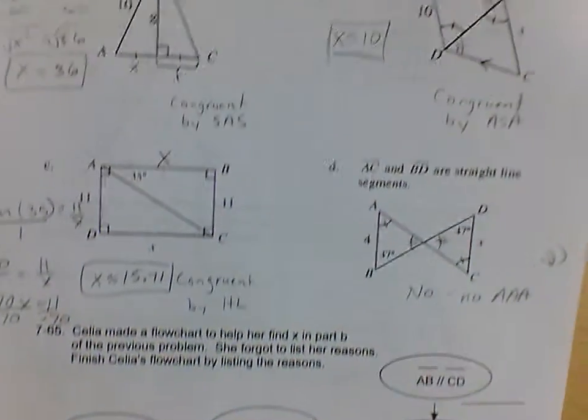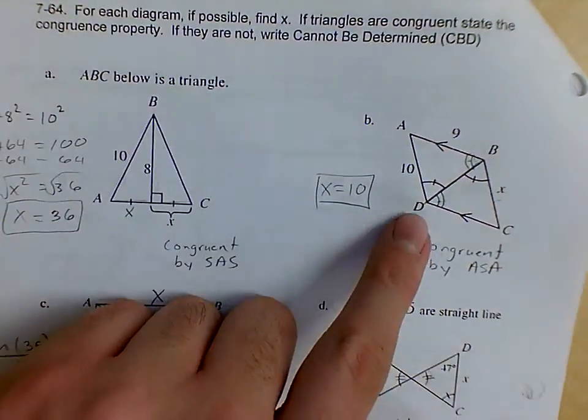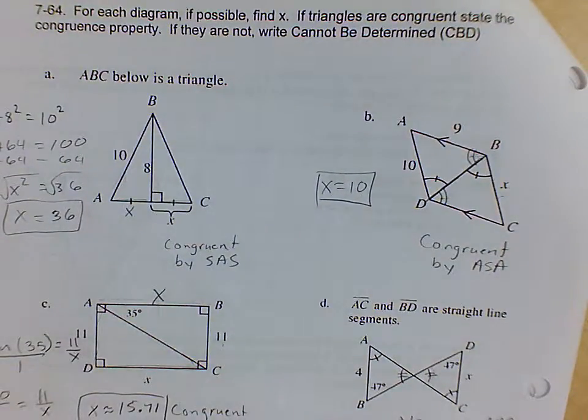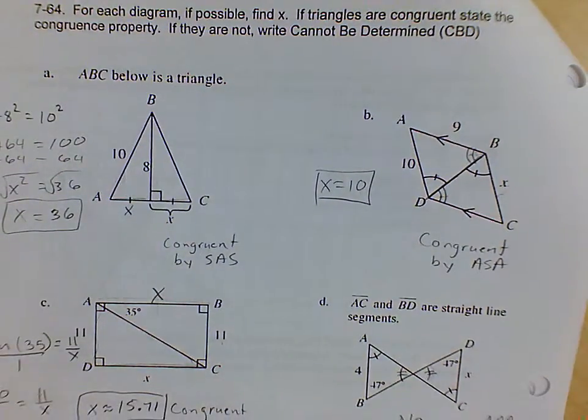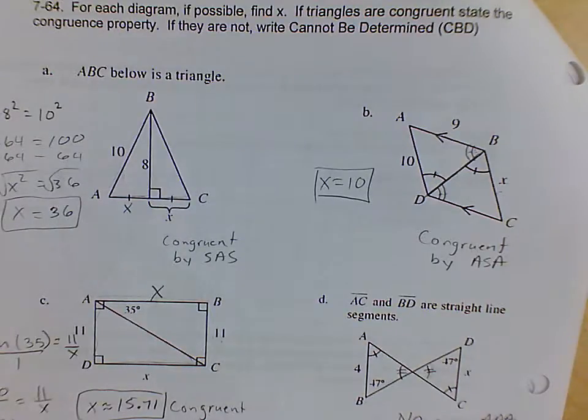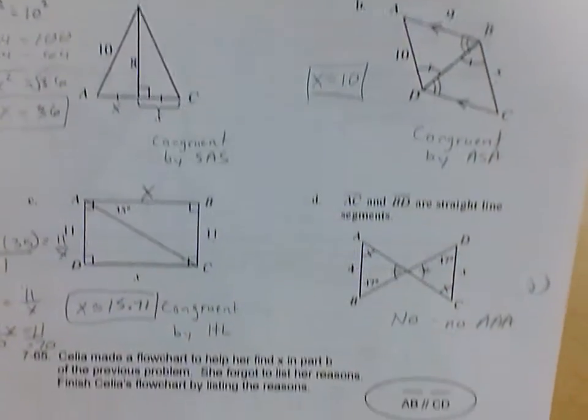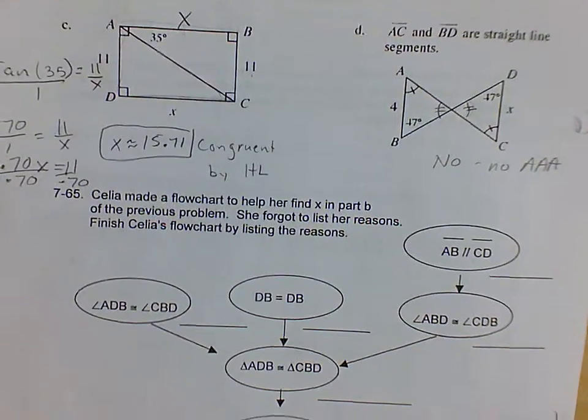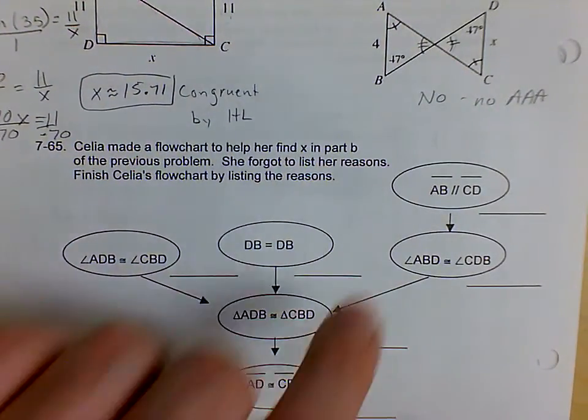But for this one, we're going to look at letter B here. So we're looking at this problem, and we want to show in a flowchart proof how those are congruent. We want to come up with all of the reasonings. So let's start right here.